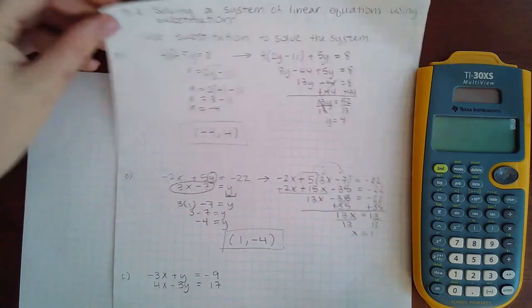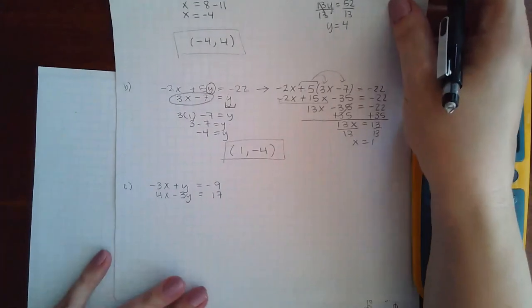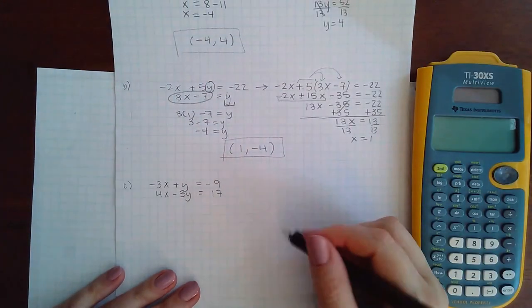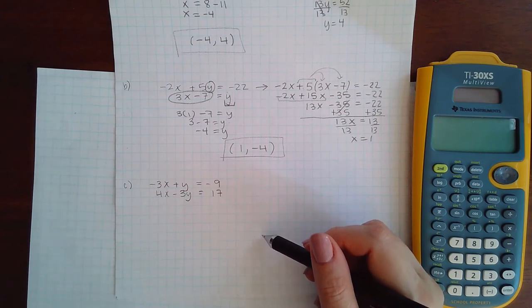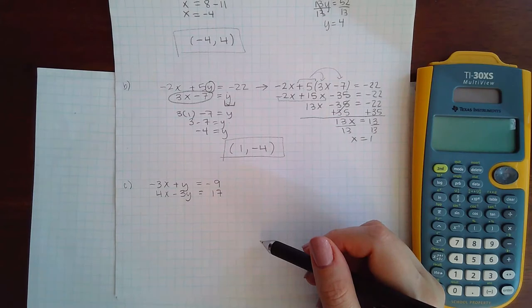Now in the last example, notice that they do not have the variable isolated yet. However, I can manipulate any one of the equations to isolate the variable. The easiest one to choose is to choose the one that doesn't have a coefficient in front of it. If all of them have coefficients in front of it, then good luck. You just pick one letter and try to get it by itself.